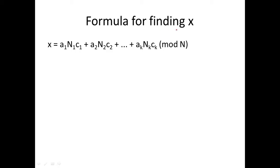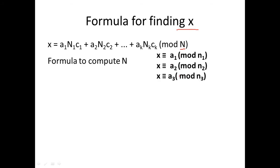Now let us take a look at the formula for finding x. It is: x = (a1·N1·c1 + a2·N2·c2 + ... + ak·Nk·ck) mod N. We have to compute the value of N first. For a system of three equations — x ≡ a1 mod n1, x ≡ a2 mod n2, x ≡ a3 mod n3 — N is nothing but n1 × n2 × n3.